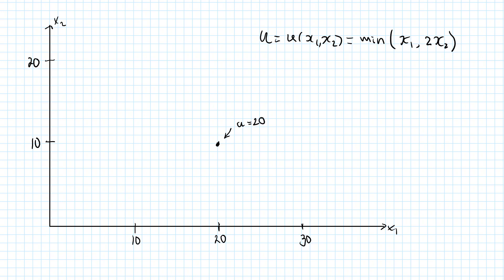If I keep x1 fixed and increase x2, then 2x2 will be above 20, but the minimum will stay at 20, so we will still have U equal to 20. Same thing if I increase x1 but keep x2 at 10: x1 will go above 20, but the minimum will stay at 20, so we have U equal to 20 here as well.